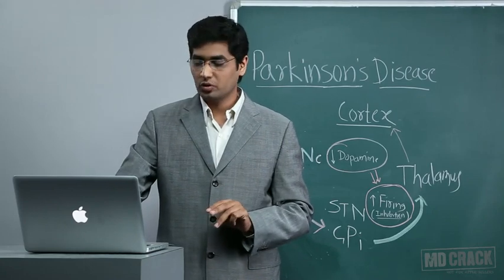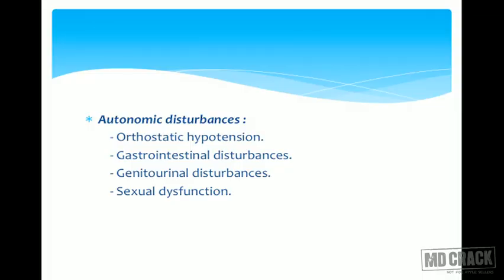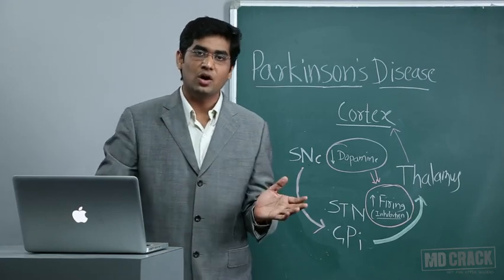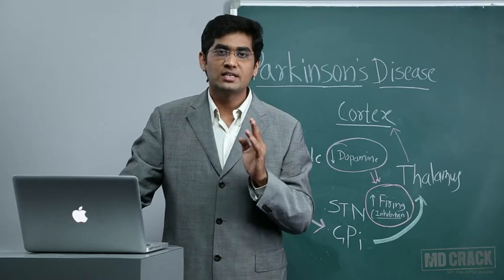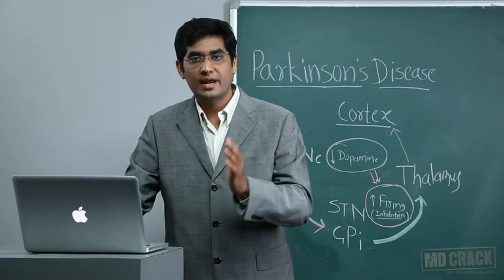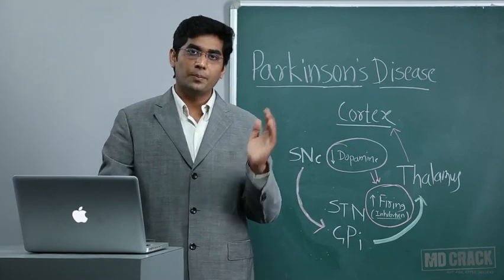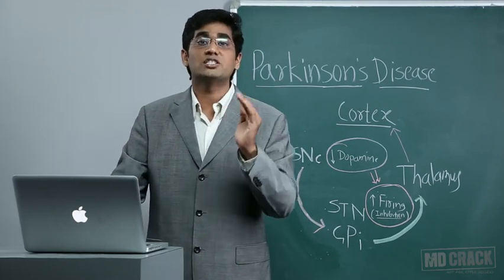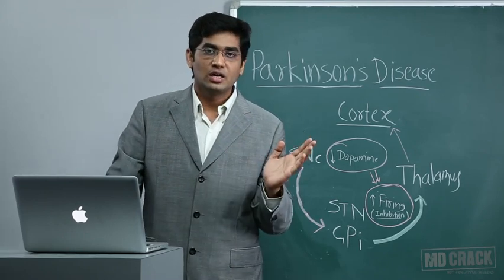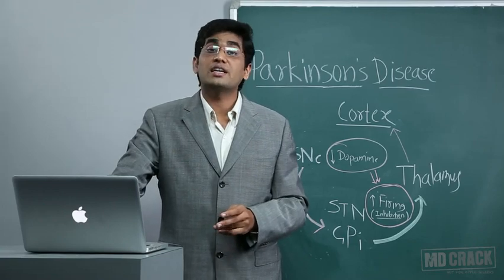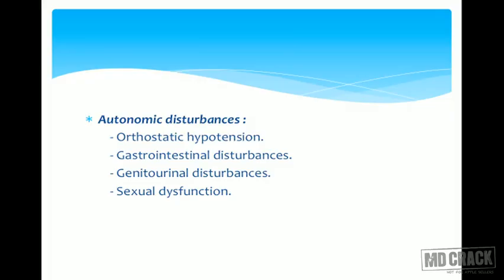Autonomic disturbances: the classical feature is orthostatic hypotension. The patient will complain of blackouts in front of the eyes when trying to stand. Orthostatic hypotension means the blood pressure drops by more than 20 mmHg systolic and 10 mmHg diastolic when the patient stands from lying down position, creating high chances of falls.